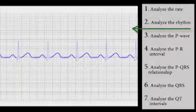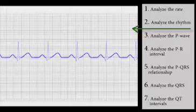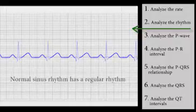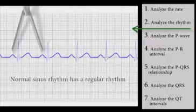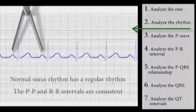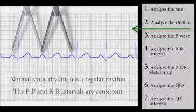Step 2. Analyze the rhythm. Normal sinus rhythm has a regular rhythm. This means the PP and RR intervals are consistent.